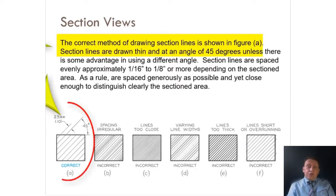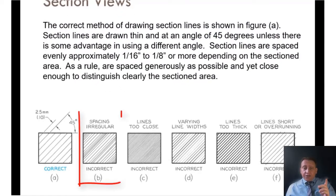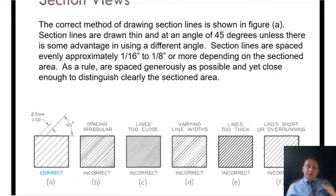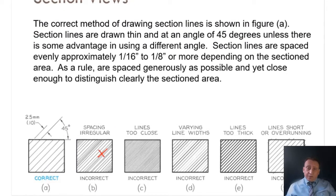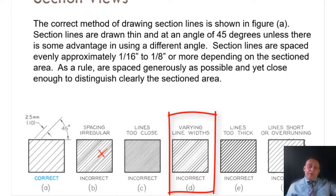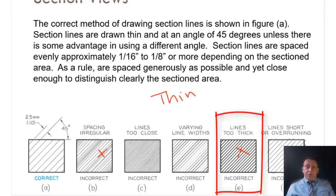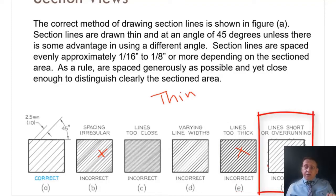The correct method for drawing section lines is shown in figure A — distance of 2.5 mm and angle at 45 degrees. B is incorrect due to irregular spacing; you cannot vary distances like 1 mm, 2 mm, 0.5 mm. C is incorrect because the lines are too close together, such as 0.5 or 0.25. D is incorrect because it mixes thick and thin lines — section lines should always be thin. E has lines that are too thick. The last one has lines that are too short or overrunning.